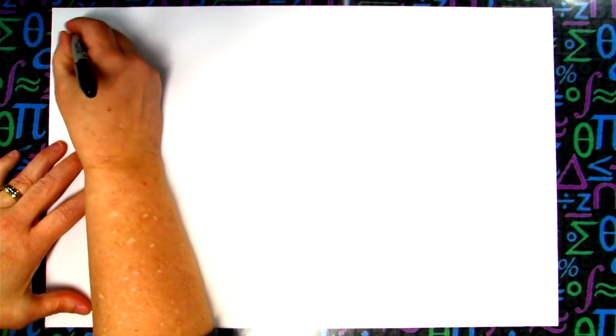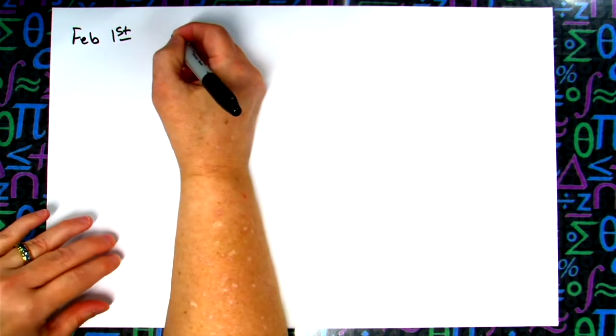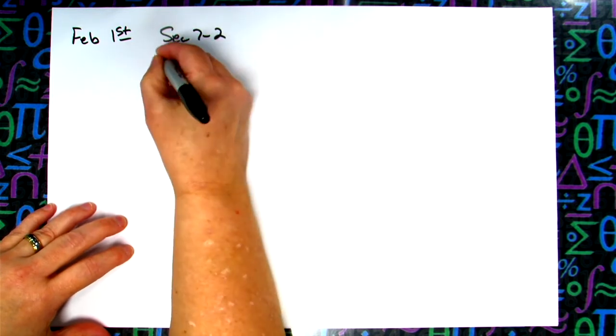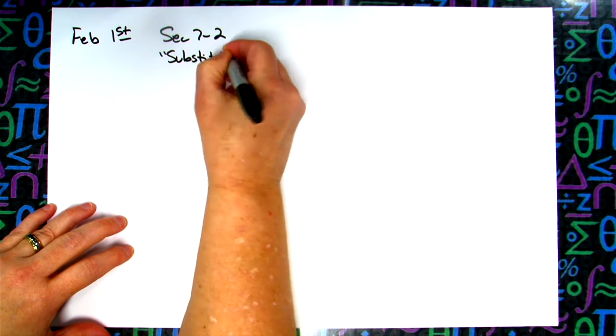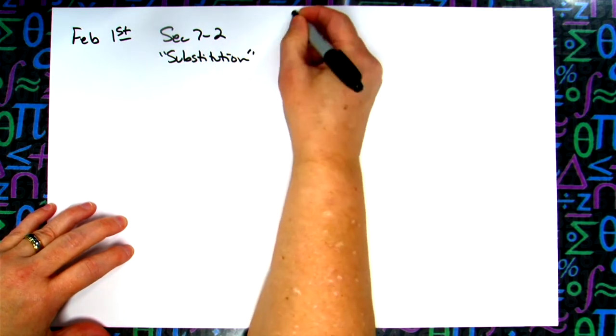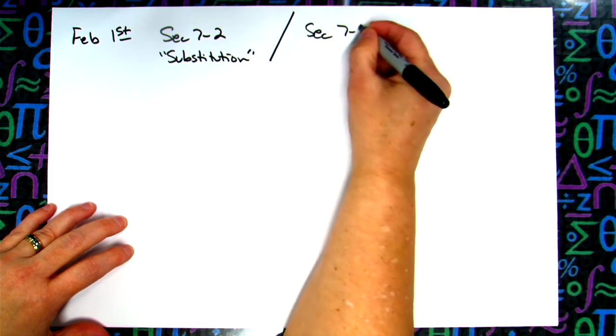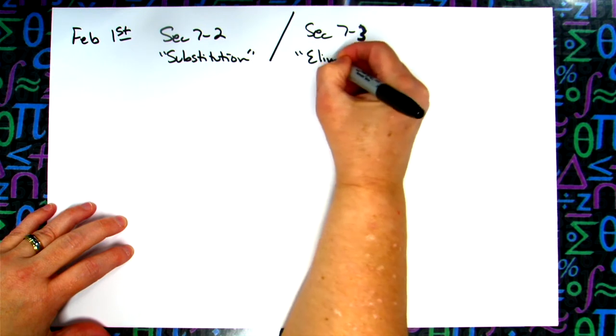All right, so let's go ahead and date this February 1st. We're going to take a look at section 7-2, which is the substitution method that you were supposed to do for our last e-learning day.